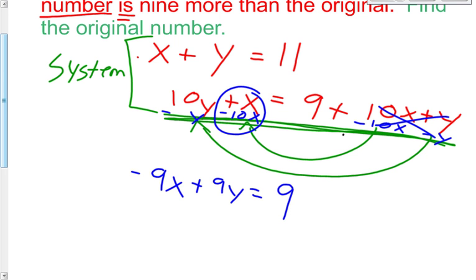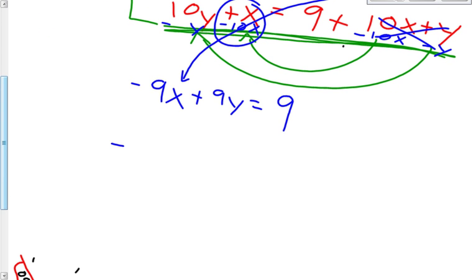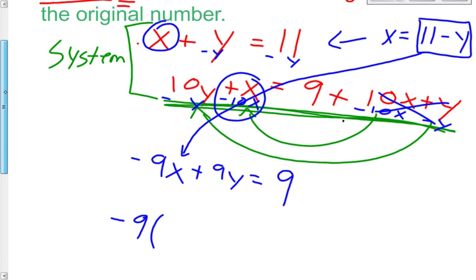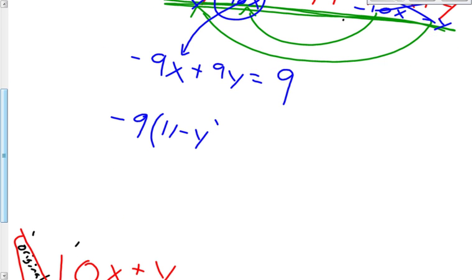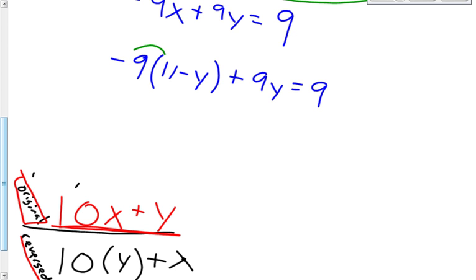And now, I like to use substitution sometimes. So what I'm going to do is I'm going to solve for x by subtracting a y. So now this equation becomes x = 11 - y. So I'm going to substitute that in for the x right there. So it's going to be -9 multiplied by my x, which is 11 - y, plus 9y, that equals 9. Let's distribute: -99 + 9y plus 9y equals 9.